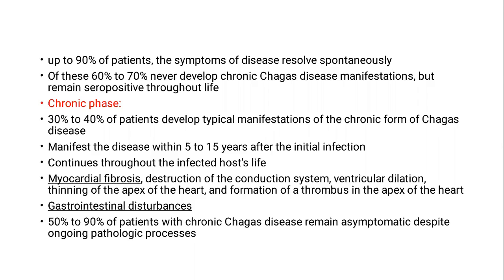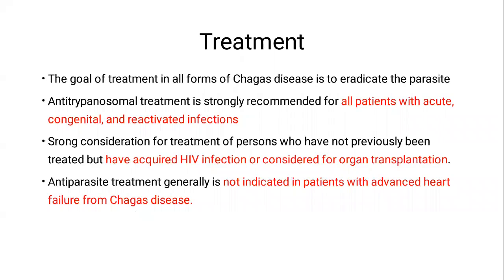Fifty to 90 percent of patients with chronic Chagas disease remain asymptomatic despite an ongoing pathologic process. Treatment of Chagas disease is indicated in nearly all patients to eradicate the parasite, in both the young and old, with special attention to patients considered for organ transplantation or who develop HIV. The only contraindication is patients with advanced heart failure.